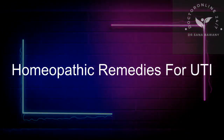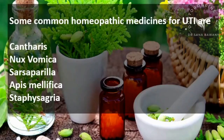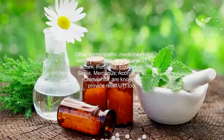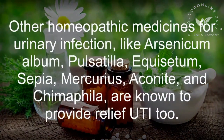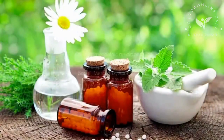Some common homeopathic medicines for UTI are Cantharis, Nux Vomica, Sarsaparilla, Apis Malefica, and Staphysagria. Other homeopathic medicines for urinary infection include Arsenicum Album, Pulsatilla, Equisetum, Sepia, Mercurius, Aconite, and Chimaphila, which are known to provide relief for UTI as well.